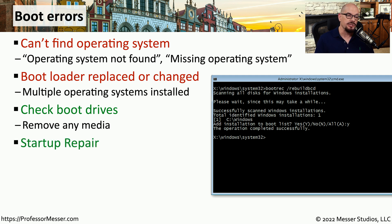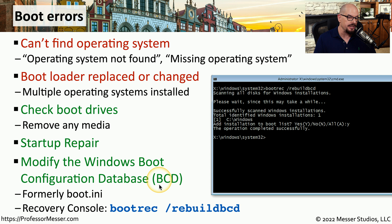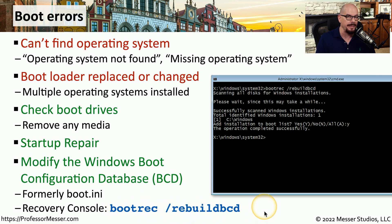Windows includes a feature called Startup Repair that will go through all of the different startup options and try to fix anything that might be causing these types of issues. If that doesn't work, you may need to manually reconfigure your system through the Windows boot configuration database, or BCD. This is done from the recovery console by running the command bootrec /rebuildbcd. This will rebuild the boot configuration database, and the next time the system boots, it will use the new database to hopefully find the proper Windows partition.